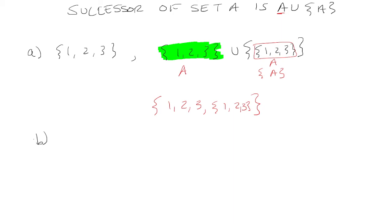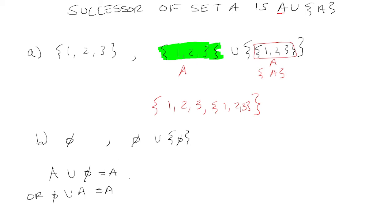Next example: we're looking for the successor of the empty set. For this one, you would just take the empty set union the set that contains the empty set. This one is confusing, so let's take an example. If A union the empty set — or the empty set union A, they're both the same thing — well, this is a theorem, and this is going to be equal to A. Now if we let A be the set that contains the empty set, then this will just be A, which is the set that contains the empty set.